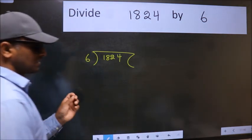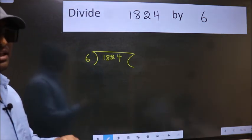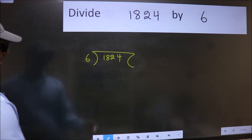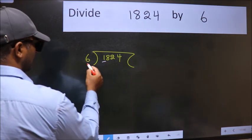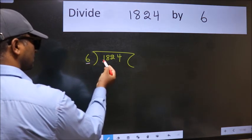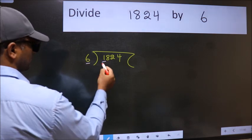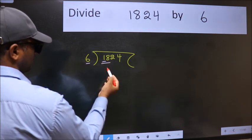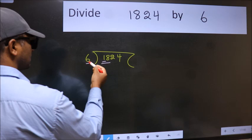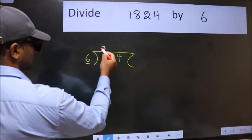This is your step 1. Next, here we have 1 and here 6. 1 is smaller than 6, so we should take two numbers: 18. When do we get 18 in the 6 table? 6 threes 18.